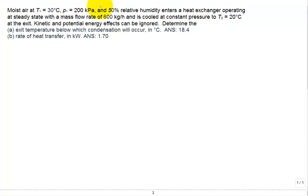So let's solve this problem. We have moist air at a temperature of 30 degrees C and a pressure of 100 kPa and 50% relative humidity, enters a heat exchanger operating at steady state with a mass flow rate of 600 kg per hour and is cooled at constant pressure to a final temperature of 20 degrees C at the exit. Kinetic potential energy effects can be ignored.